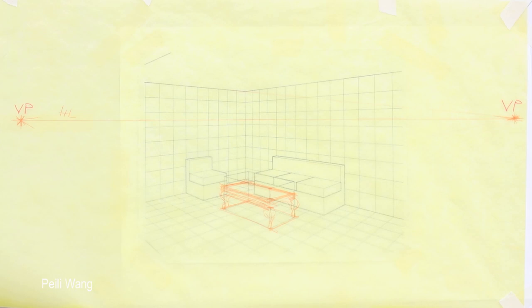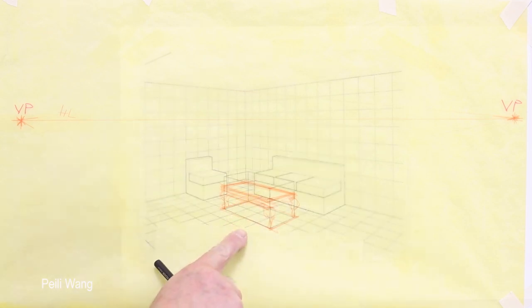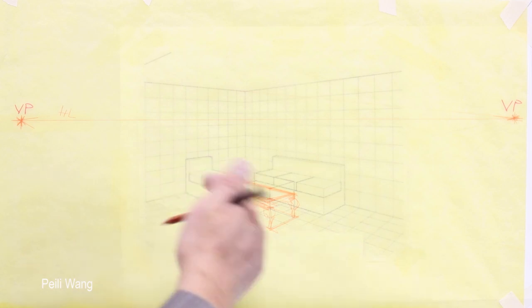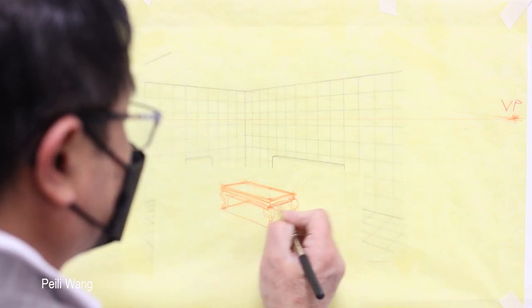Now I use one piece of paper — white paper underneath — take a look. Just freehand, we already got a copy table. Take a look first. Free hand drawing, because we already have a proportion. I've just put it on the top. This is a freehand sketch.